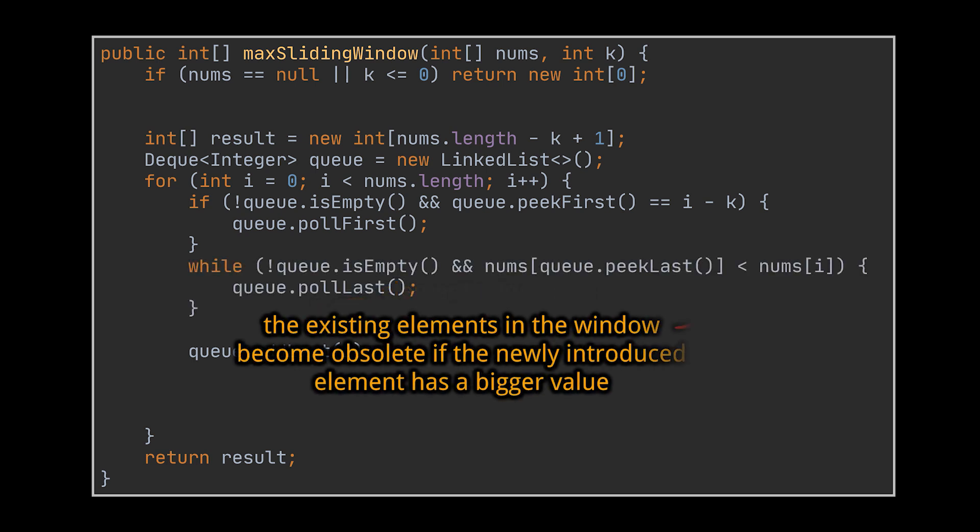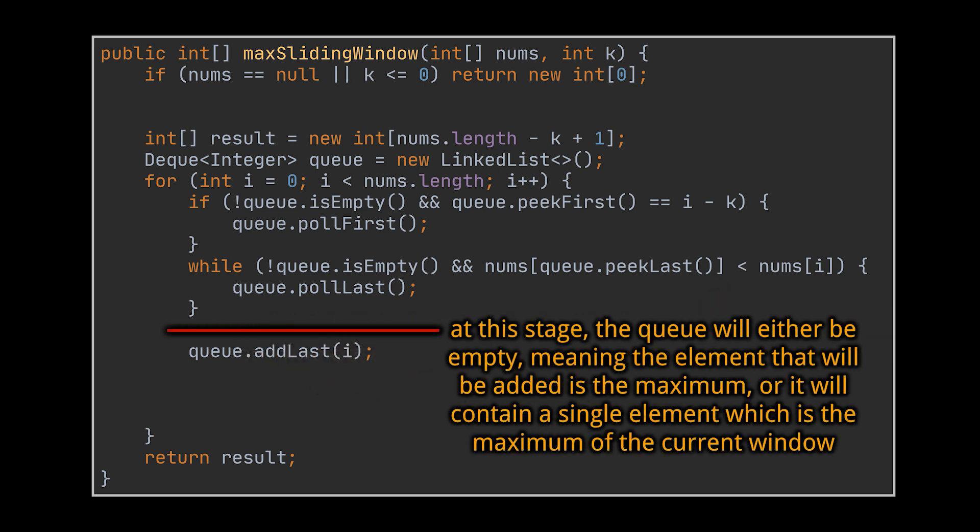As we previously mentioned, we will keep on polling the last element from the queue if the newly added integer to the window is bigger than the last element or any element that precedes it. After doing that, the queue will either be empty, meaning the element that will be added in this iteration is the maximum, or it will contain a single element and that element is the maximum of the current window.